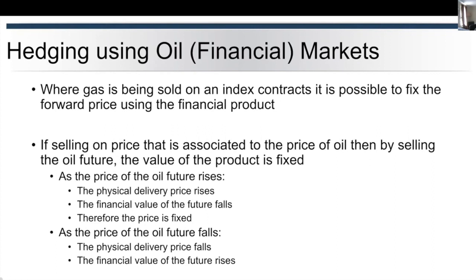What we're going to look at here is how we actually undertake that, but before we get there, just to recap: what we're doing here is we're selling on a price that's associated to the price of oil because that JCC price is linked to the Brent price. The value of that product can be then fixed by using the oil future where there is no gas market.